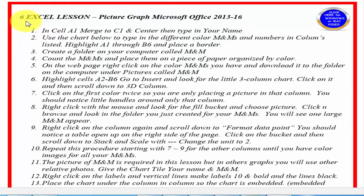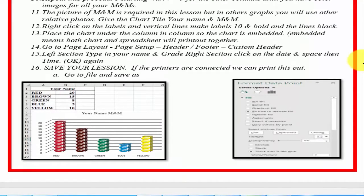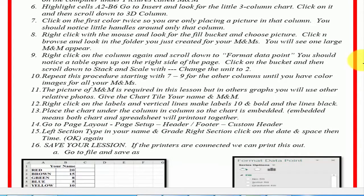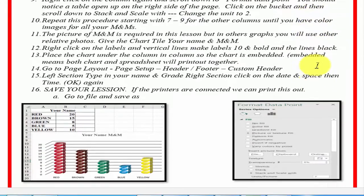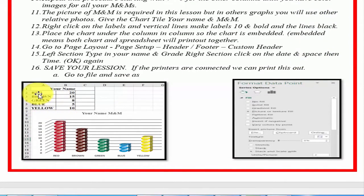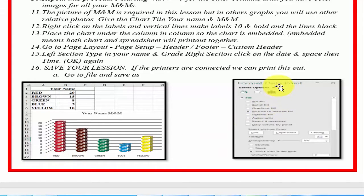You're looking at Lesson 6. Lesson 6 is a picture graph using Microsoft Office 2013 to 2016. We've provided directions and a video to assist you. At the bottom of the page we provided red, brown, green, blue, and yellow M&Ms. In this example we're using M&Ms — red, because the label is red — and over here to the right is the format data, which we'll show you in the video.